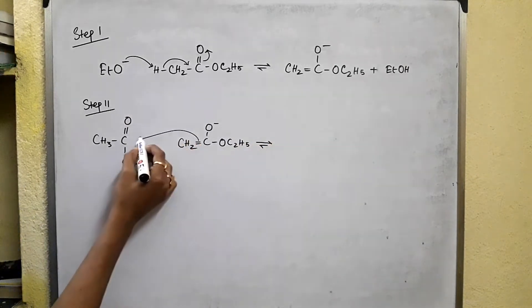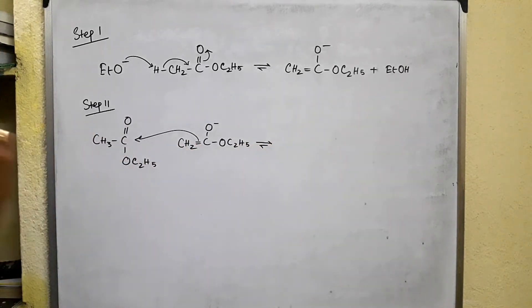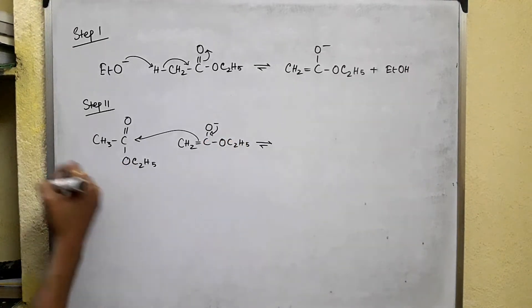So this enolate ion is going to attack the electrophilic carbonyl group of the second molecule of an ester and this negative charge drops.